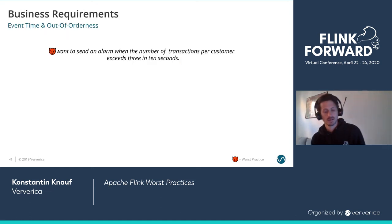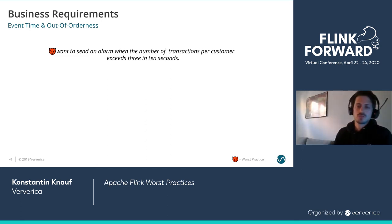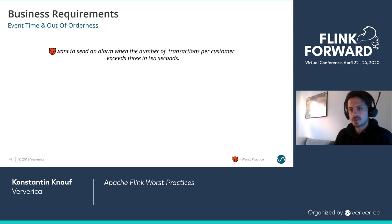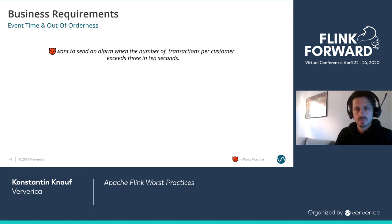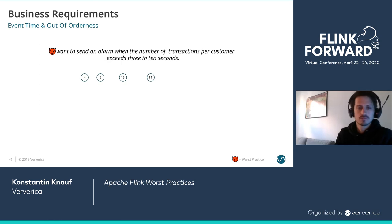I want to highlight two scenarios around business requirements that I've often seen leading to long discussions. Take this requirement: send an alarm when the number of transactions per customer exceeds three in 10 seconds. It's a reasonable requirement, but it's actually not so easy. If events come in all for the same customer with timestamps 4, 8, 11, 13 — should I send an alarm? At 11? At 15? At 21? It's not immediately clear when you should send an alarm.